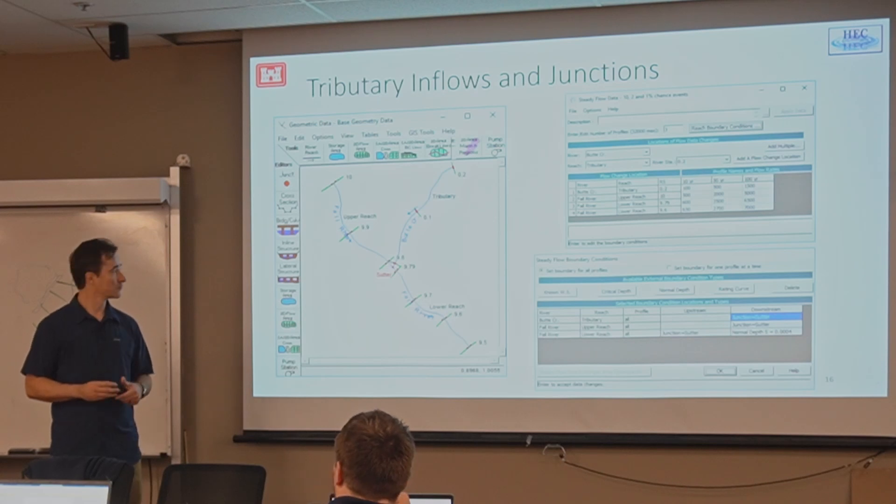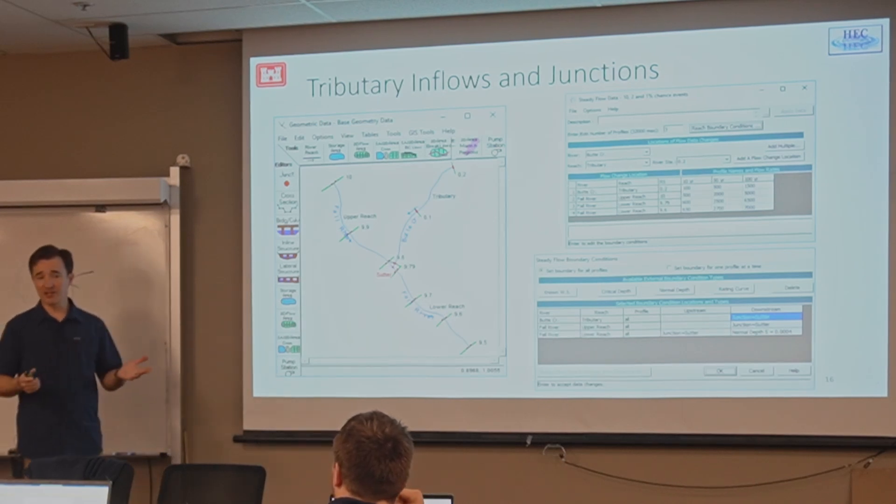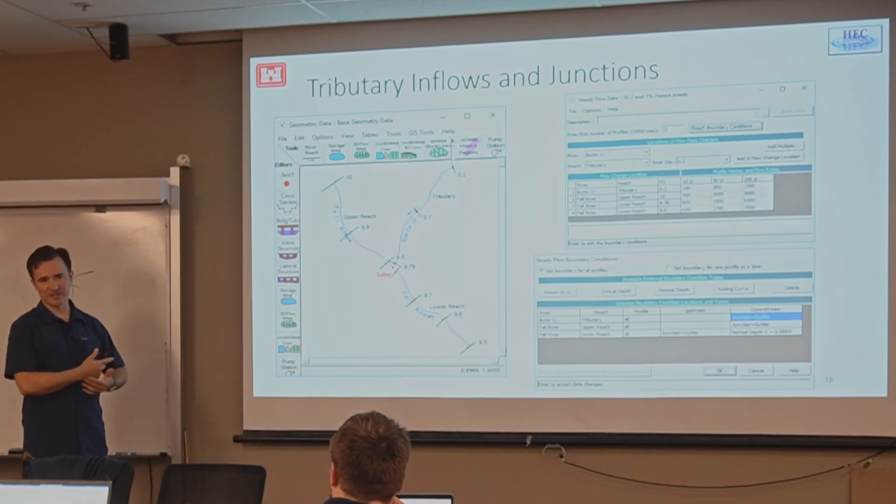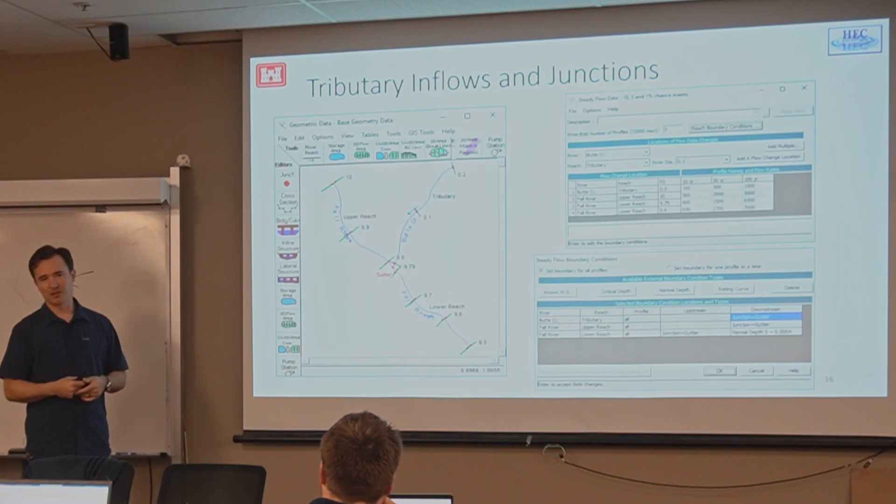And what would the rating curve when we use that? Rating curve, if you have a gauge and there is a known rating curve for that location, you can utilize that. Or if there's a different model already set up, an unsteady model, and they can give you a rating curve for that location, then you can utilize that. And that's better than normal depth. So I would say, in terms of preference, I would put stage at the top, then maybe rating curve, then normal depth.